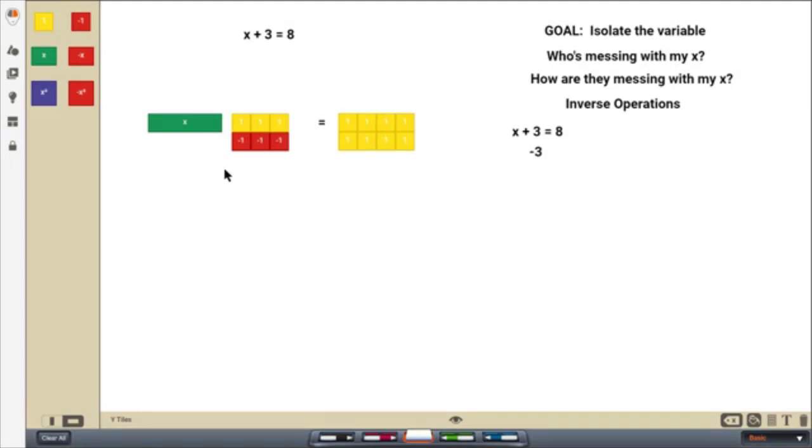Now I have to keep it even because this is an equation. If I'm messing with one side, I got to mess with the other side. So I'm going to take this, duplicate it, bring it over here. Okay. So now I subtracted three from both sides. Let's show that minus three. And we're going to put that on this side.